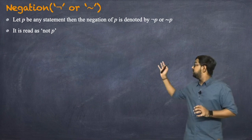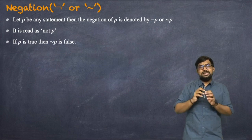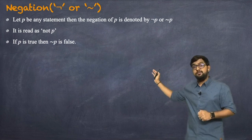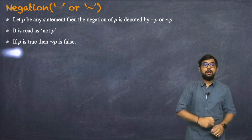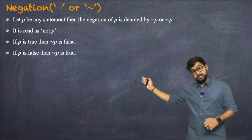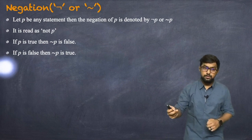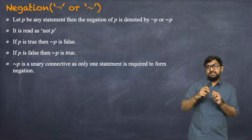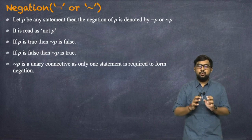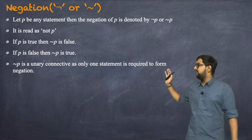If P is true then its negation, not P, will be false. In the same manner, if P is false then the negation of P will be true. Not P is a unary connective, as only one statement is required to form the negation.